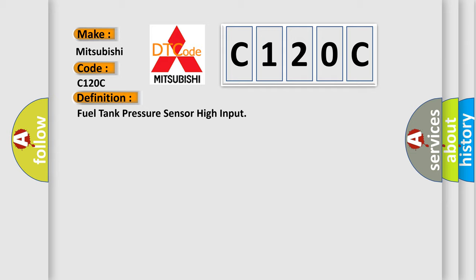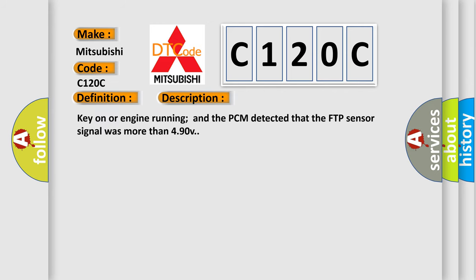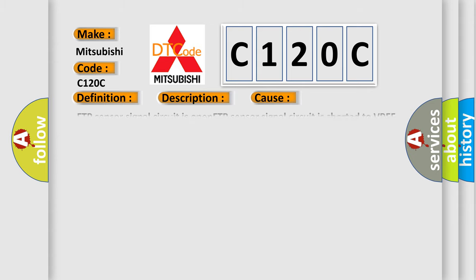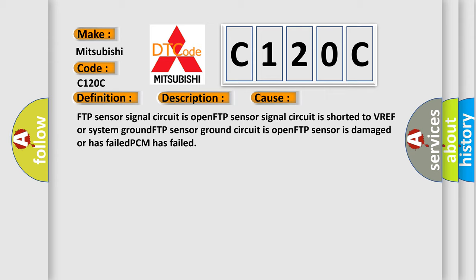And now a short description of this DTC code. Key on or engine running, and the PCM detected that the FTP sensor signal was more than 4.90 V. This diagnostic error occurs most often in these cases: FTP sensor signal circuit is open; FTP sensor signal circuit is shorted to VREF or system ground; FTP sensor ground circuit is open; FTP sensor is damaged or has failed; or PCM has failed.